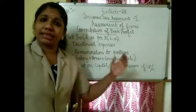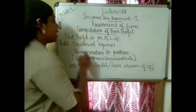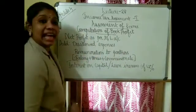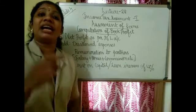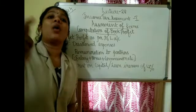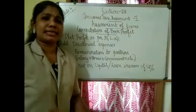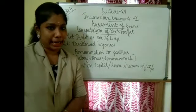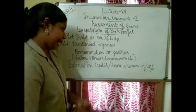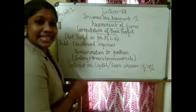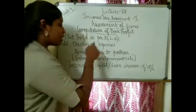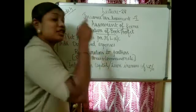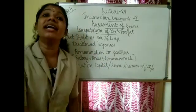We are going to calculate net profit, then we are going to add back disallowed expenses. After disallowed expenses, the next item is remuneration to partners.